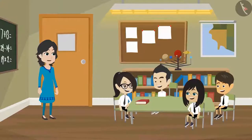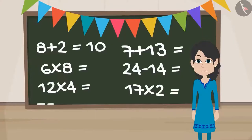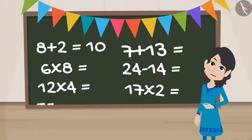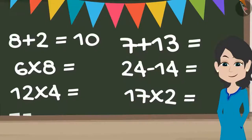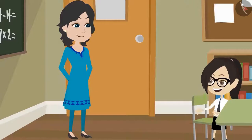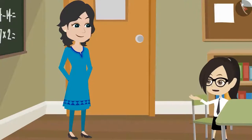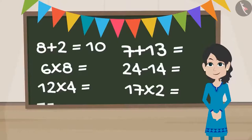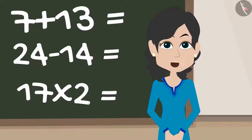So children, let us end today's class here. Wish you a very happy birthday, Madam. Thank you very much for your wishes. You all are invited for the birthday party at 6 o'clock at my home. Madam, we will definitely come but we don't know the route to your home. Oh yes, I forgot to tell you that.